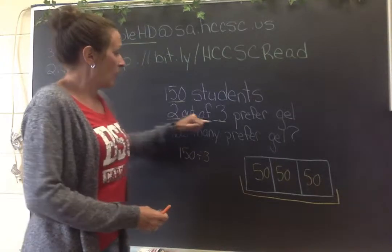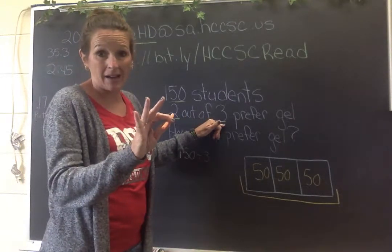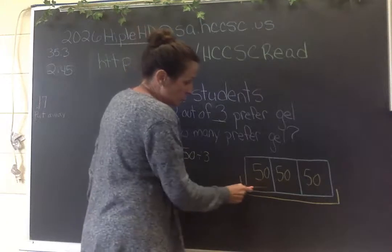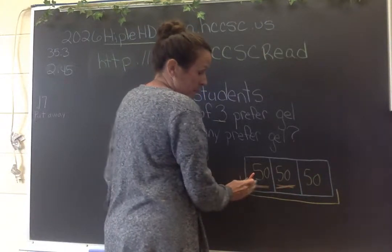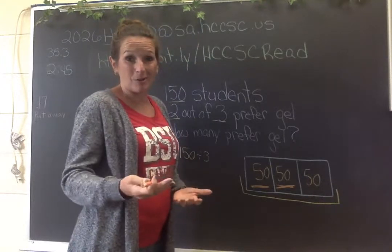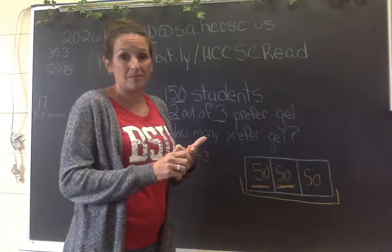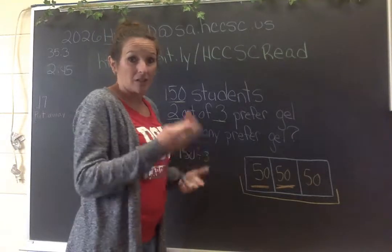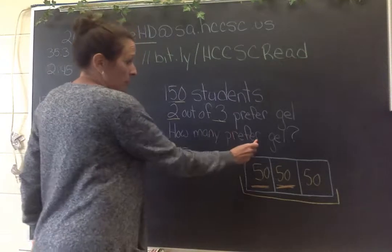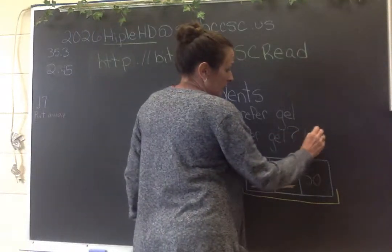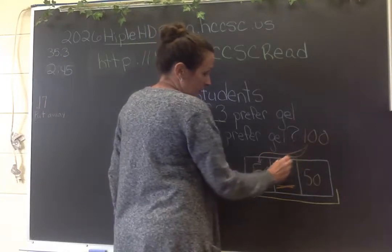Back up here it says two out of three people prefer gel. So I can go back to my diagram — two out of the three prefer gel. Because two prefer gel, I have 50 and 50. 50 plus 50 is 100. How many prefer gel? 100. I got that from those two boxes.